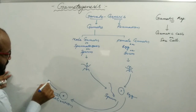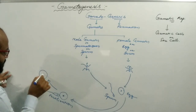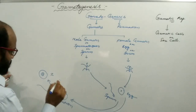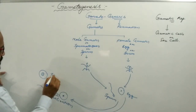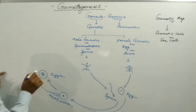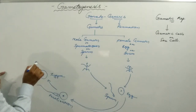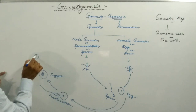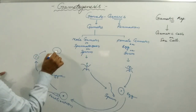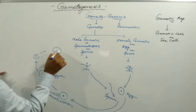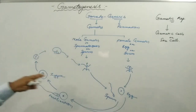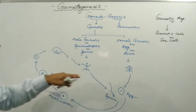By fertilization, a zygote is formed. The zygote is the product of fertilization, and by the mitotic division of the zygote a multicellular embryo is produced, which grows into a young individual.